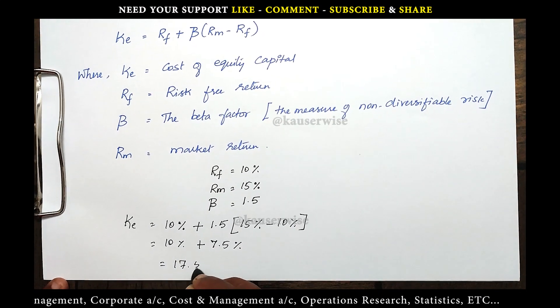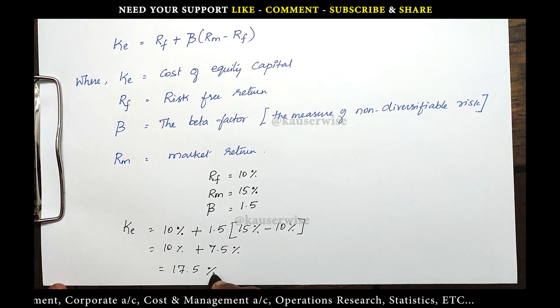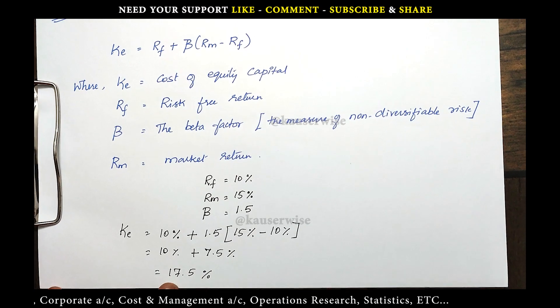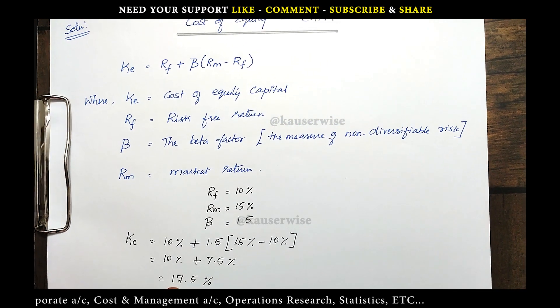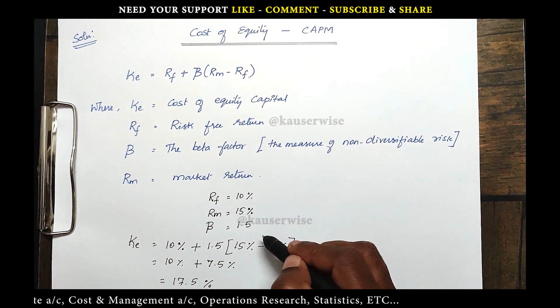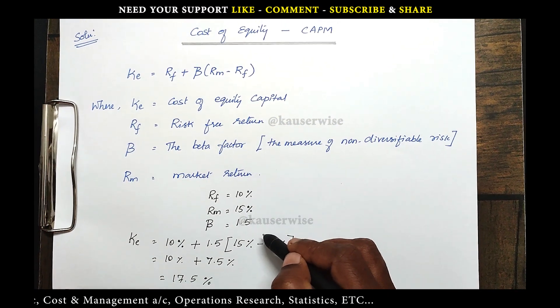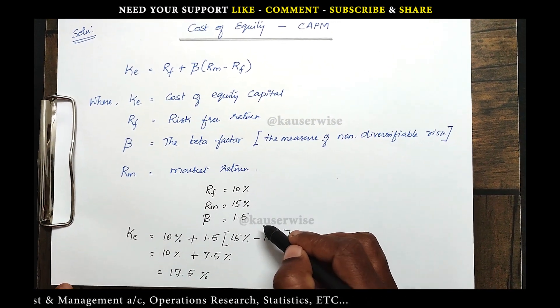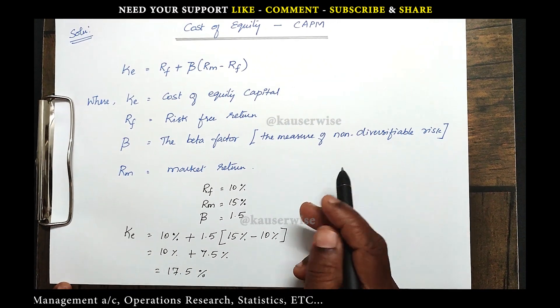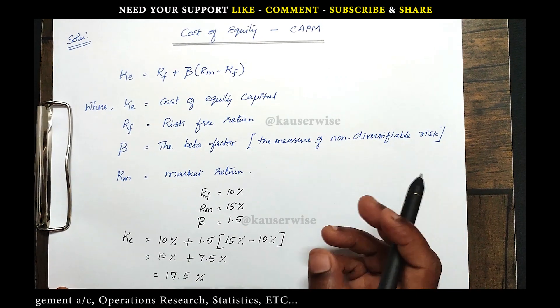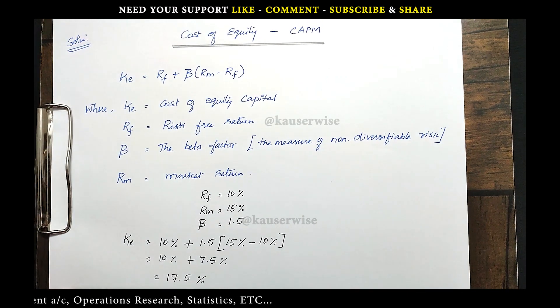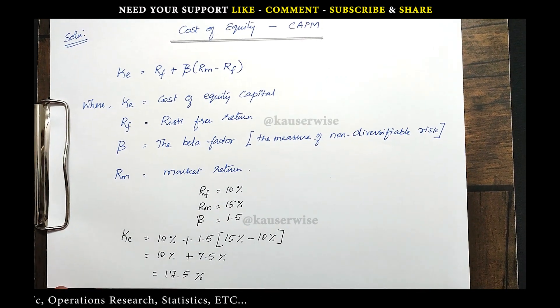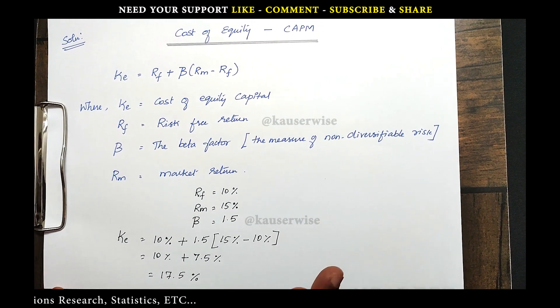So the total is 17.5%, which is the cost of equity according to the given information. Now we are going to find out the new or revised cost of equity according to two different scenarios.